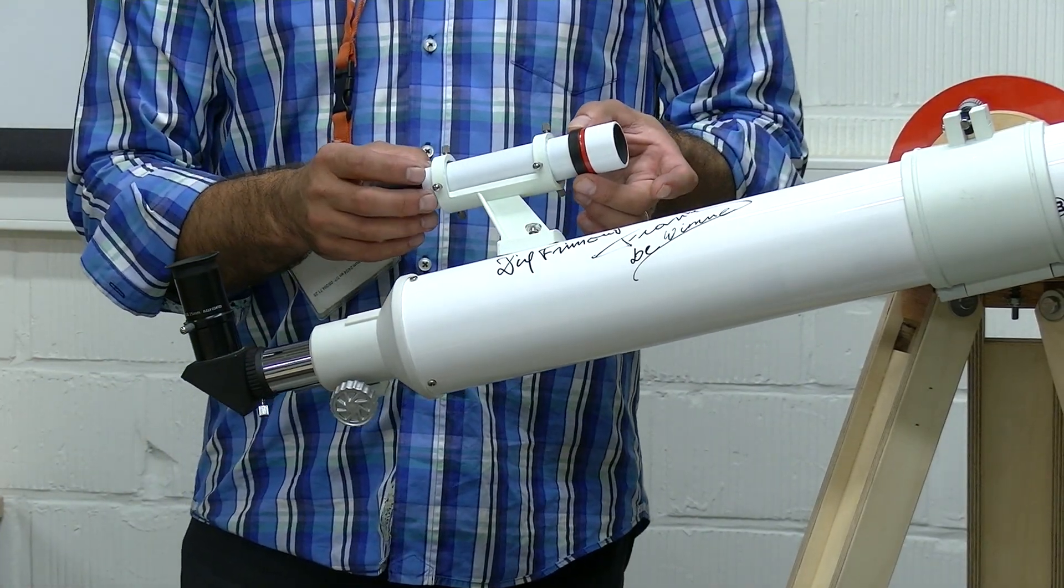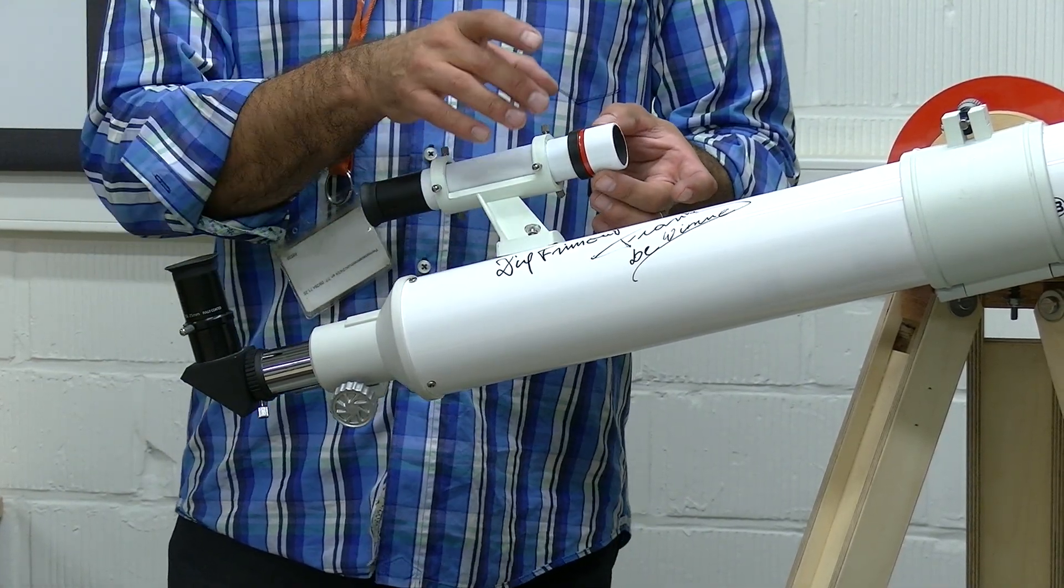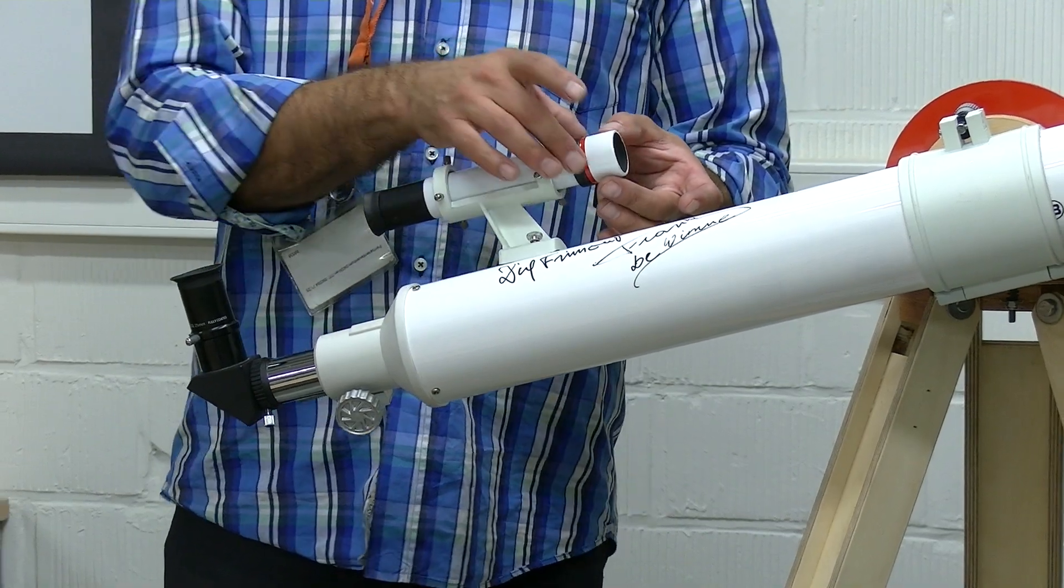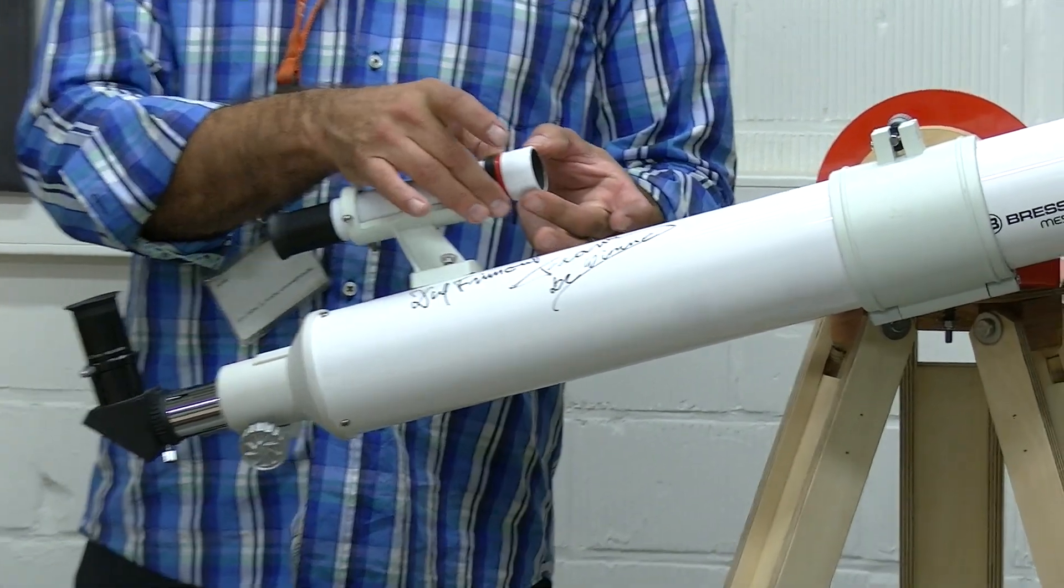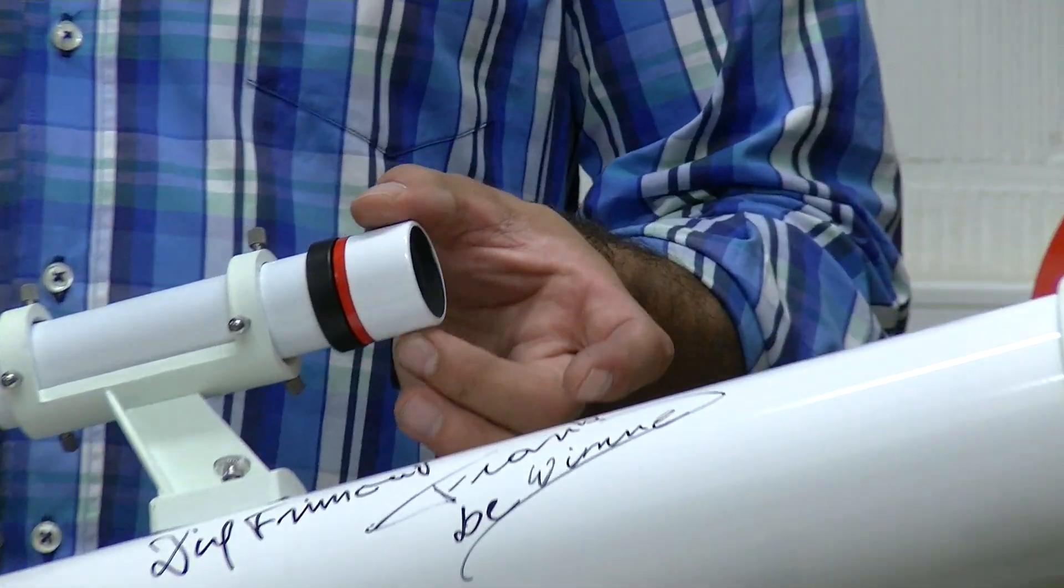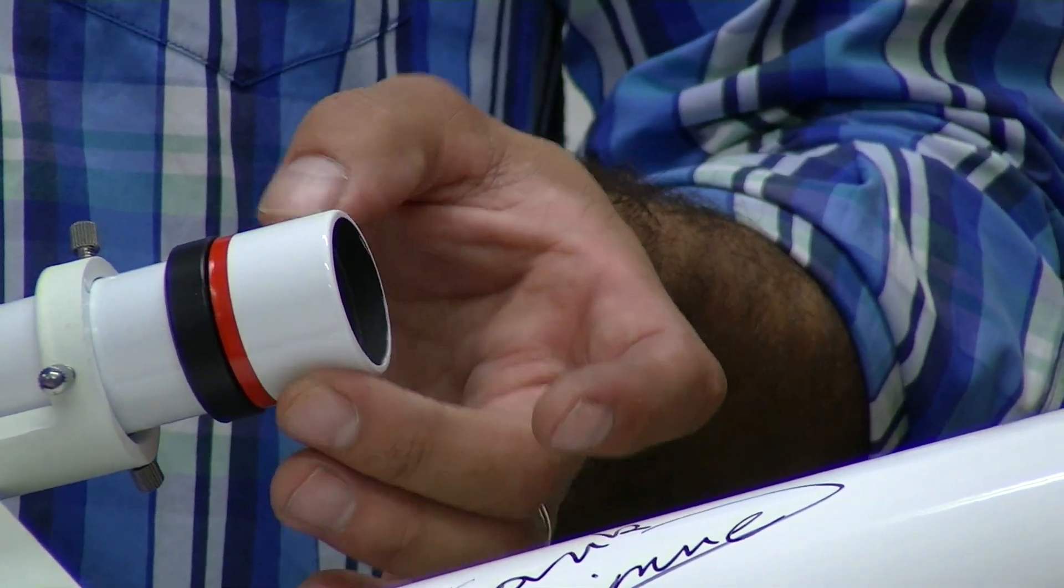If the image in your finderscope is not sharp, you can always focus the finderscope as well. You rotate the black ring, loosen it, and then you can turn the lens forward-aft.